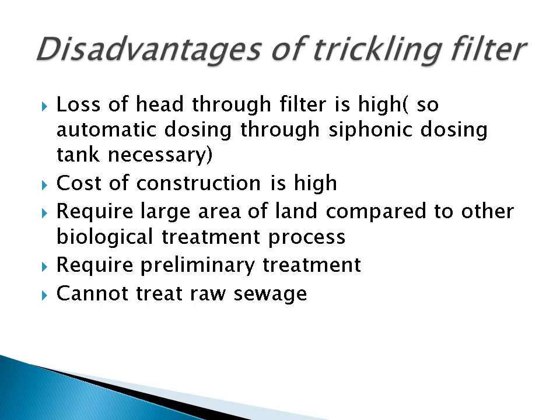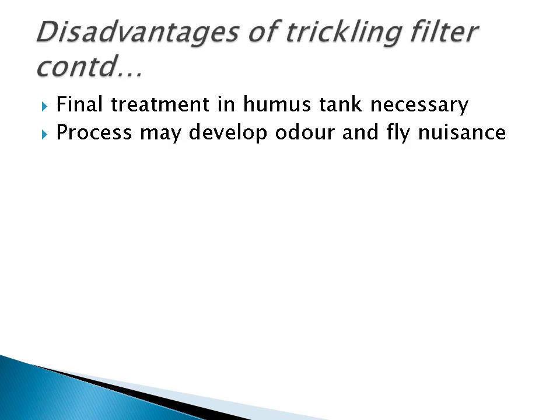The disadvantages of the trickling filter: the loss of head through the filter is very high, which is why we provide an automatic siphonic dosing tank. The cost of construction is also very high, and it requires large areas compared to certain other biological treatment processes. The sewage used in the trickling filter should be pre-treated — raw sewage should not be passed through the trickling filter because it will clog the filter and affect its efficiency. So at least preliminary treatment must be given. Odor and fly nuisance is a disadvantage of the trickling filter. The final treatment requires a humus tank, which is very necessary for the trickling filter.